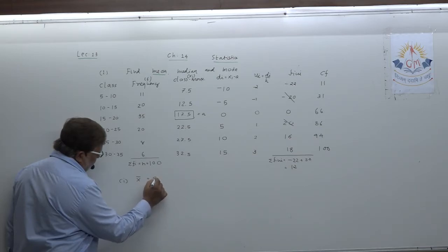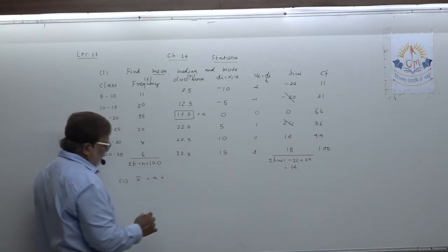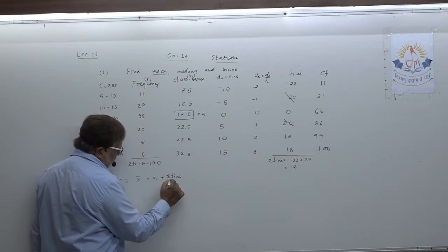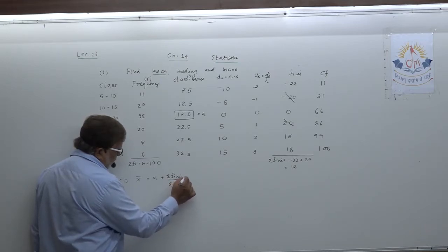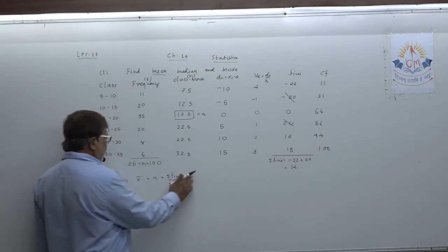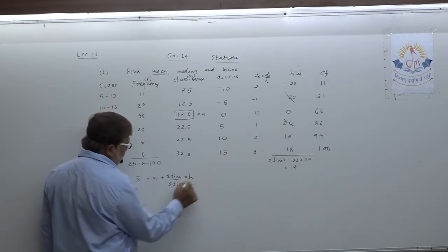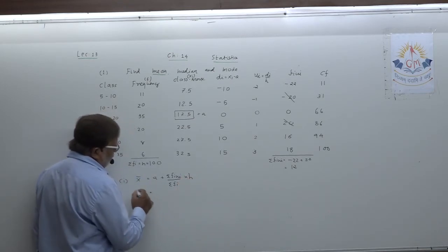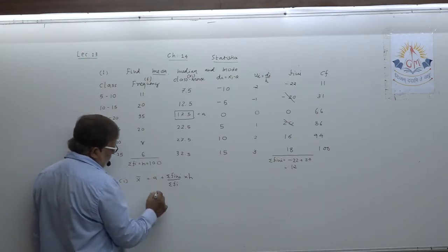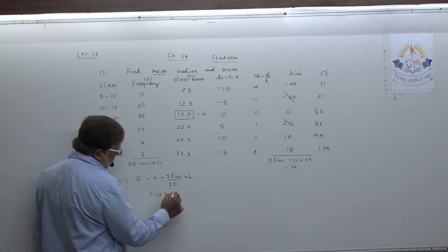The formula for mean is: X̄ = A + (Sigma Fi·Ui / Sigma Fi) × H. A equals 17.5, Sigma Fi·Ui is 12, upon Sigma Fi that is N equals 100, class height is 5. After cancellation: X̄ = 17.5 + 0.6 = 18.1.